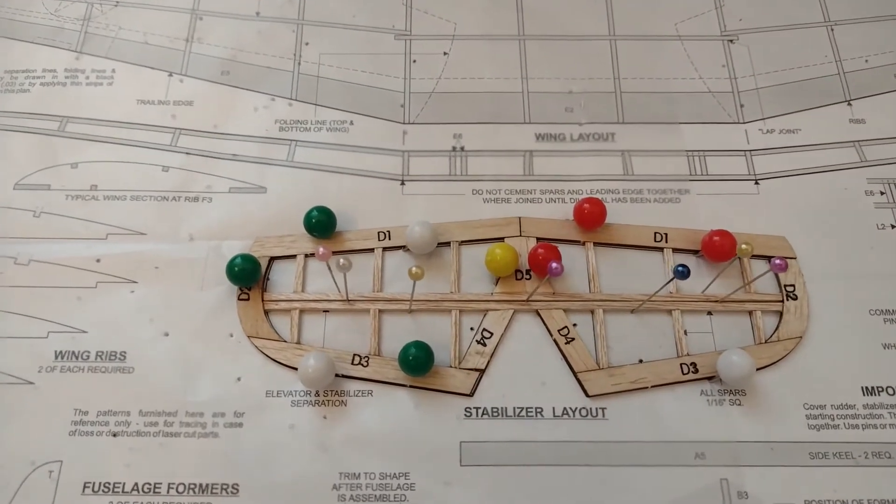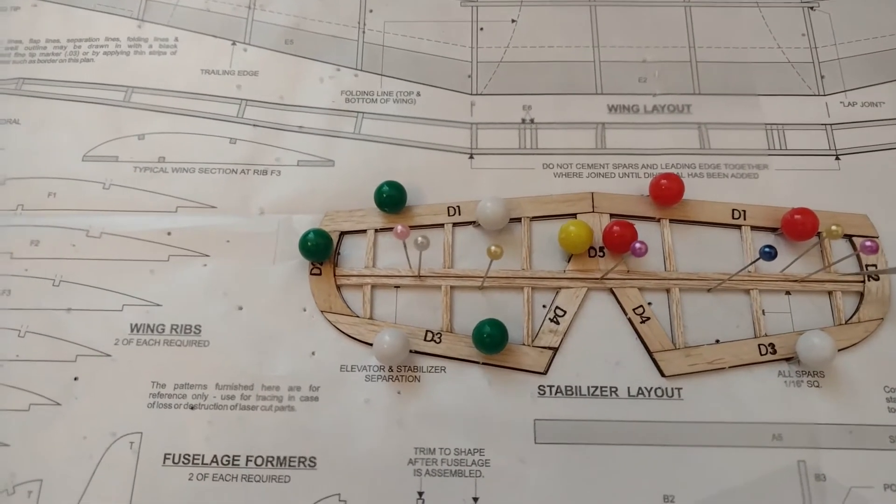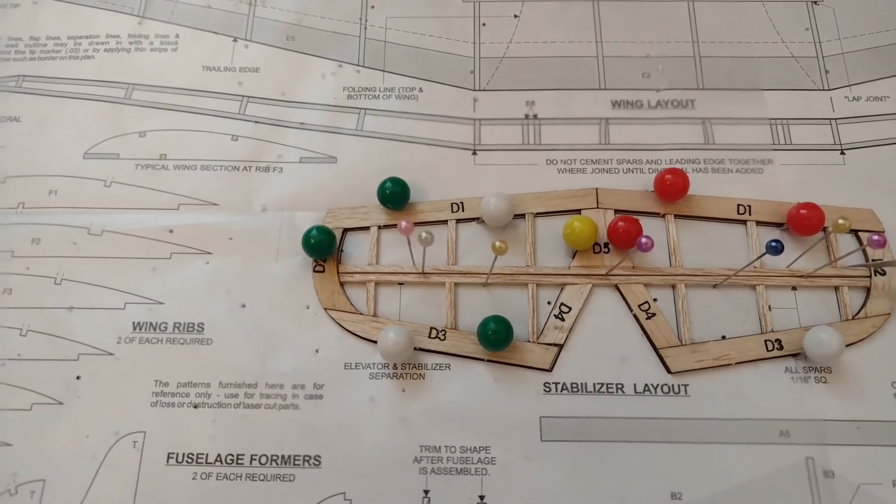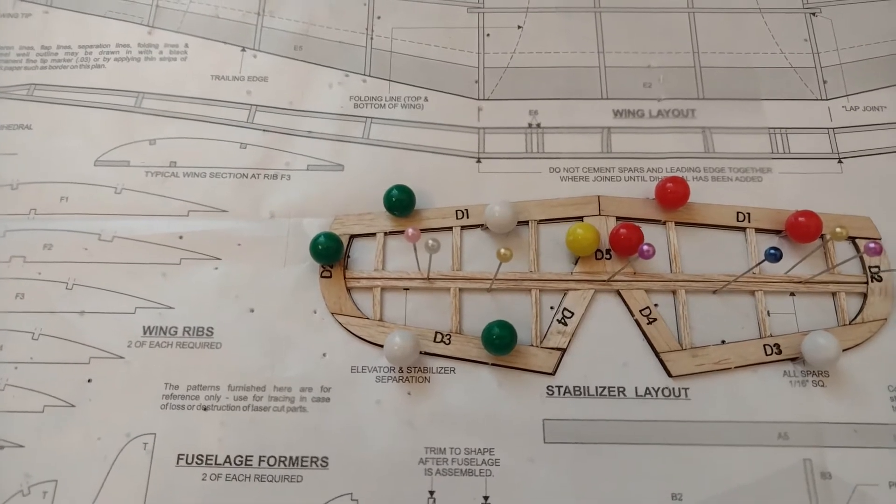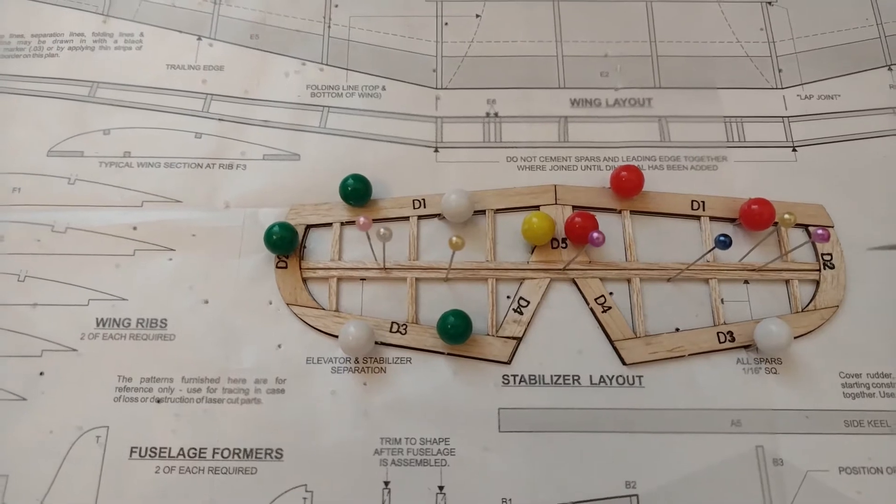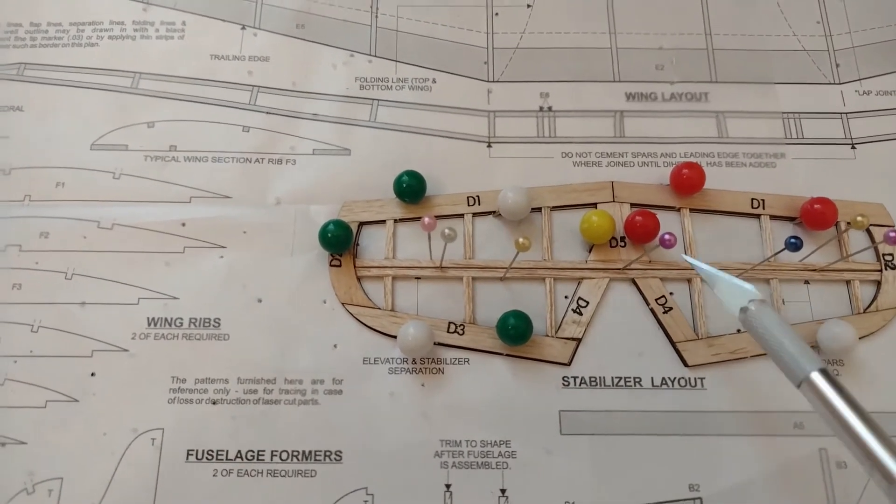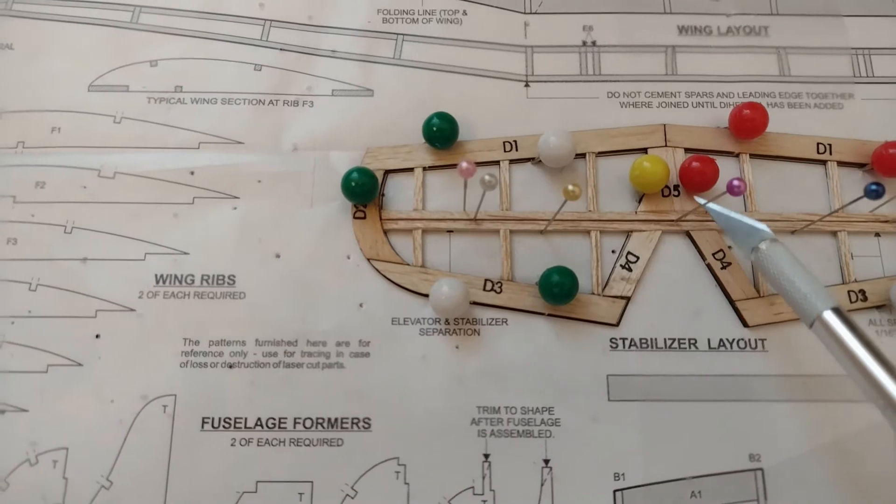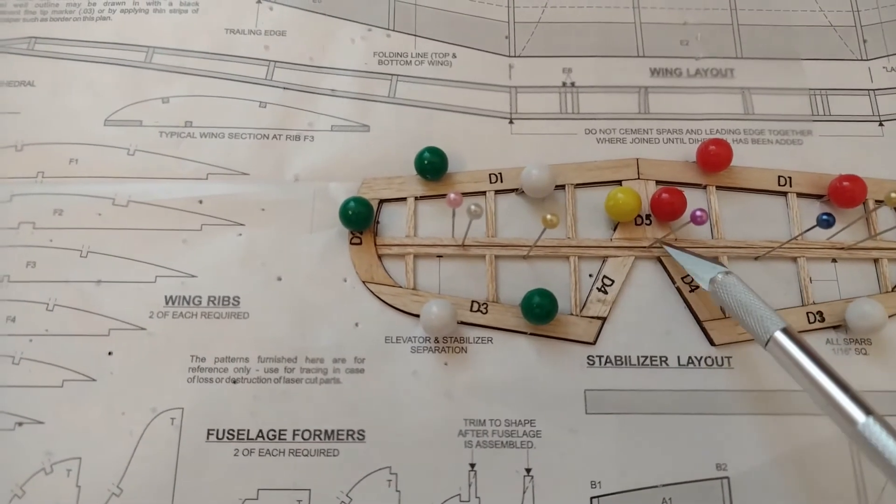I've put in one extra spar so in the future I can cut it across here and have the movable surface. For that, I had to adapt piece D5 by shortening it so this one would fit.